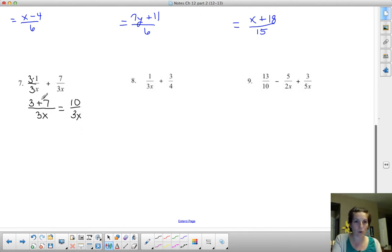Now not every problem works out quite that nicely or that pretty. So let's do one more together. In number 10, now we have that same 3x, but we would like to make a common denominator with the number 4. So 3x and 4.